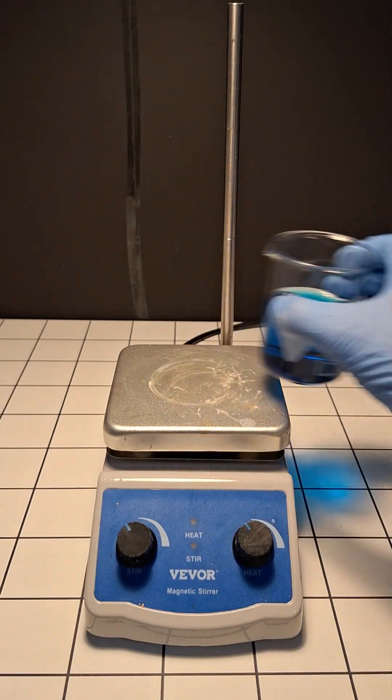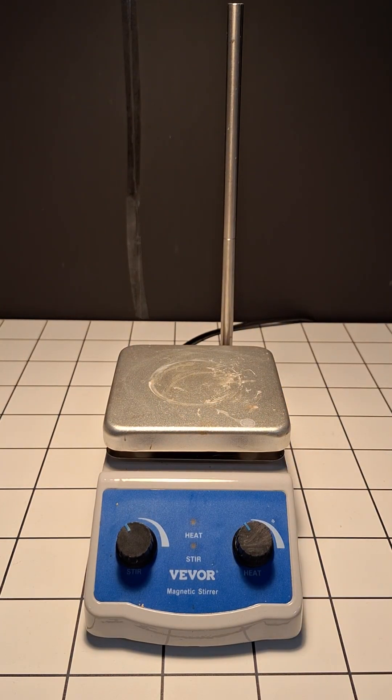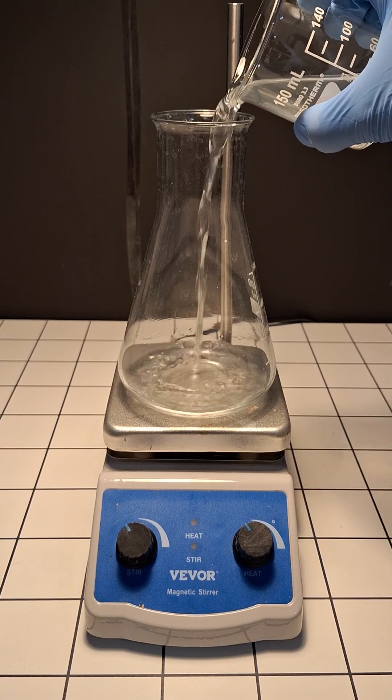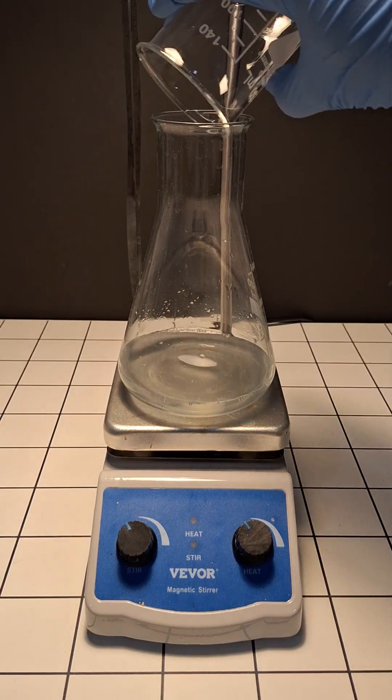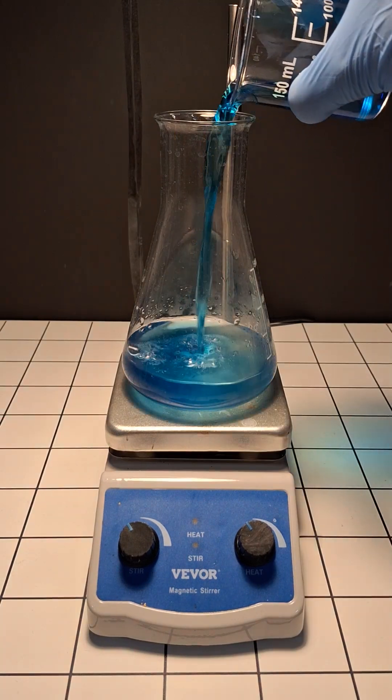Now that both of the solutions are ready, all that we have to do is mix them together. We'll start by pouring the first solution into a large Erlenmeyer flask. All we have to do now is pour in the second solution.